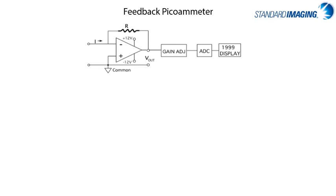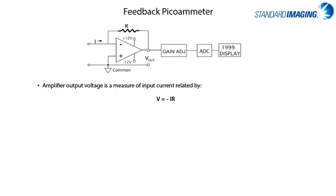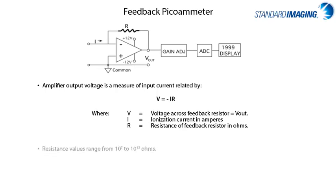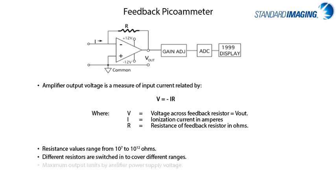The feedback picoammeter measures an input current as related by the traditional V equals IR relationship, with different resistors covering different ranges. The maximum output limits are defined by the power supply voltage.